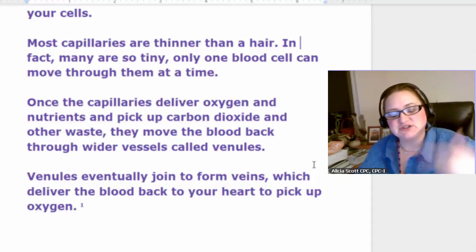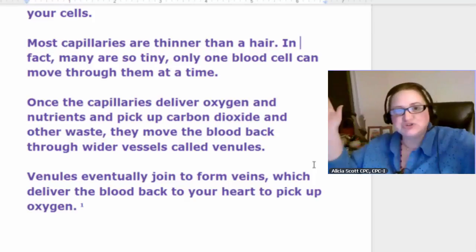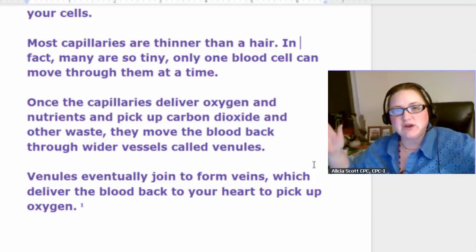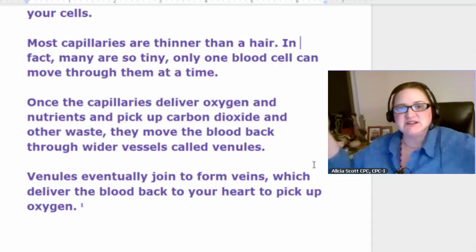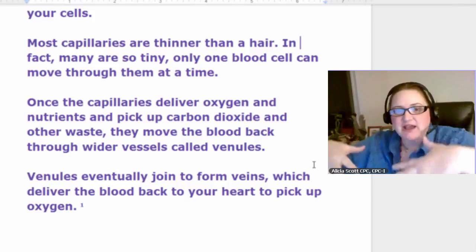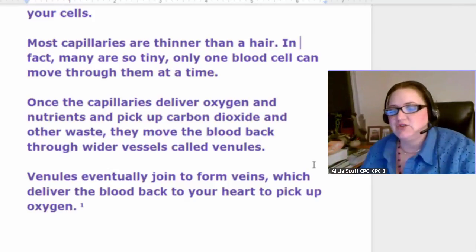And then the venules go into the veins and the veins deliver the deoxygenated blood up through the vena cavas. You got the superior and inferior vena cavas back into the atrium, down into the ventricles, then up whoosh through those pulmonary arteries because it's deoxygenated and it goes into the lungs, and then it goes back out, picks up that good oxygen and whoosh back into the heart through the pulmonary veins.